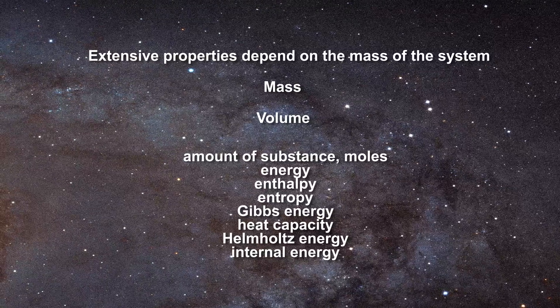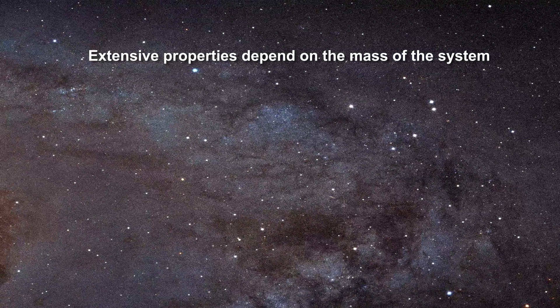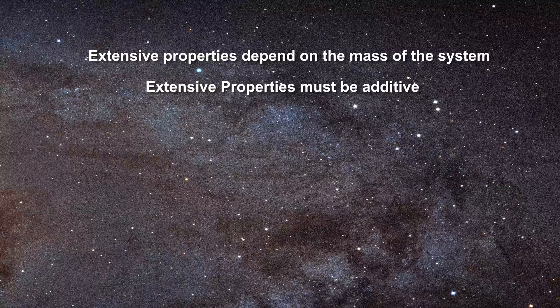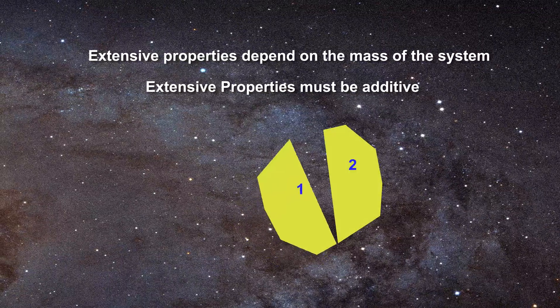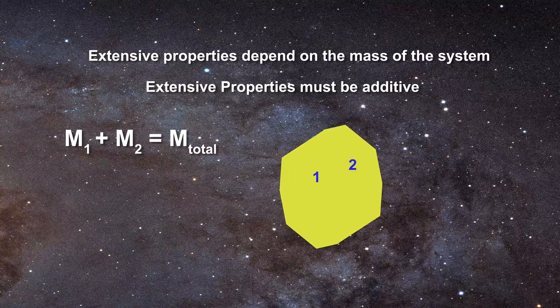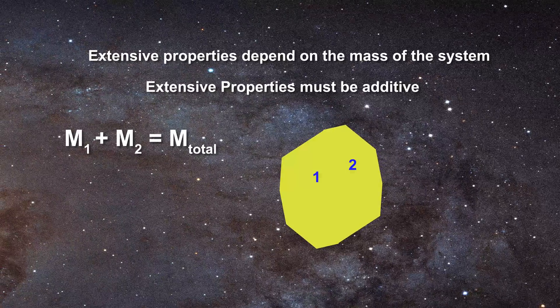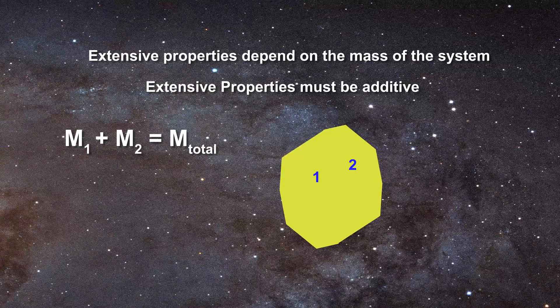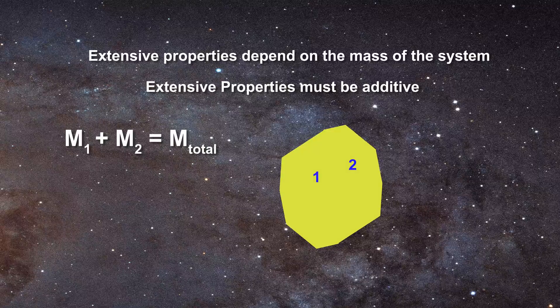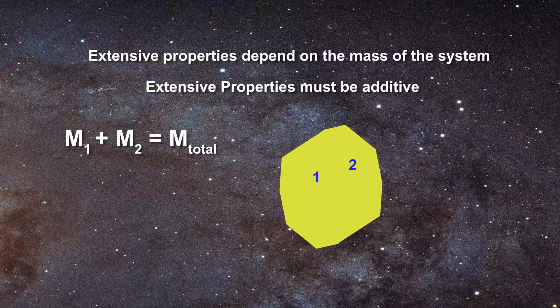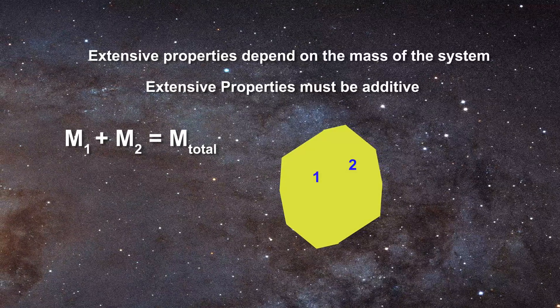Now, the central aspect of extensive properties is that they must be additive. If you take two bricks, for instance, and add them together to make a larger brick, then the mass will increase in an additive fashion, and so will the volume. That is why both mass and volume are extensive properties.